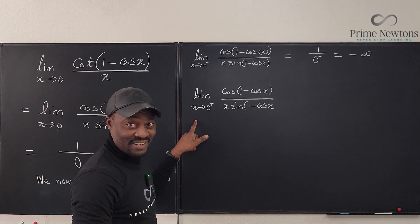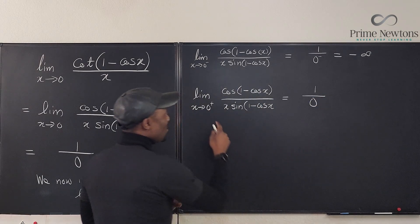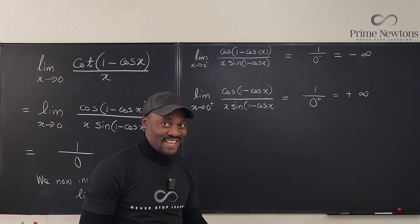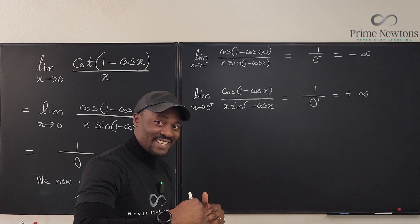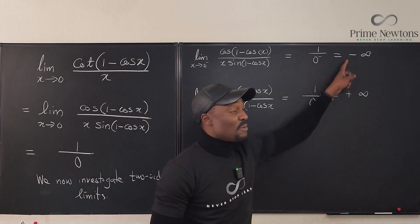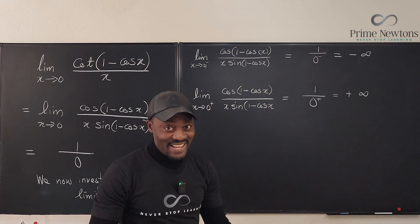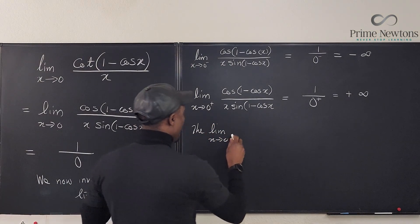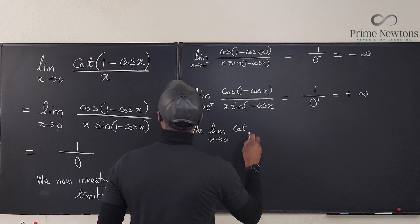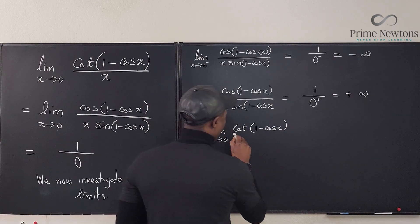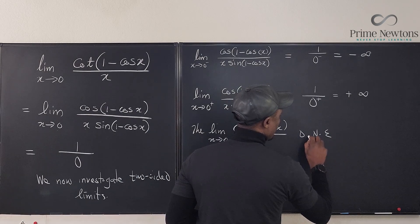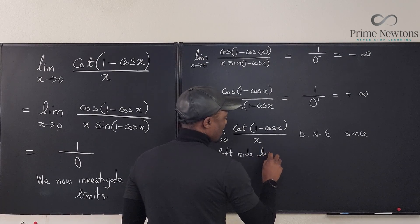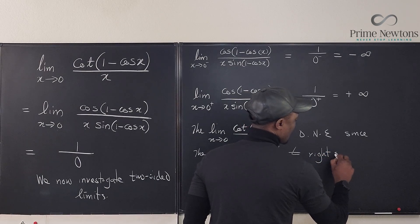For the right-hand limit, we have the same case of one over zero, but this zero is approached from the right — so the result is positive infinity. A limit only exists if the limit from the left equals the limit from the right. Negative infinity does not equal positive infinity, so the limit does not exist. Therefore, the limit as X goes to zero of cotangent of (one minus cosine X) over X does not exist, since the left-side limit is not equal to the right-side limit.